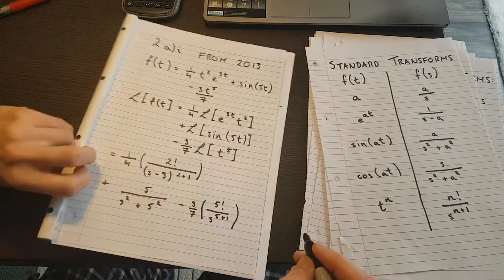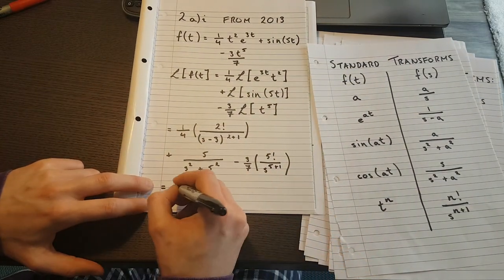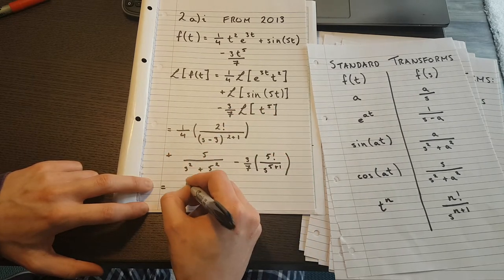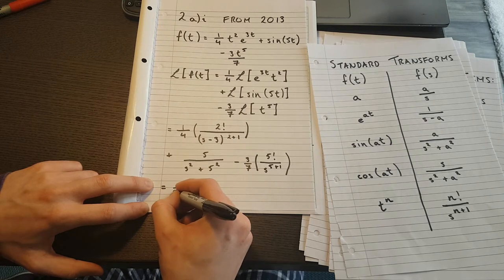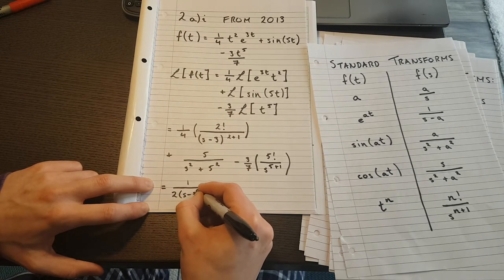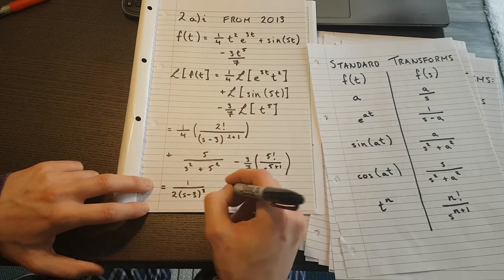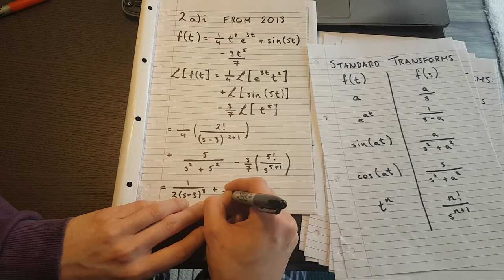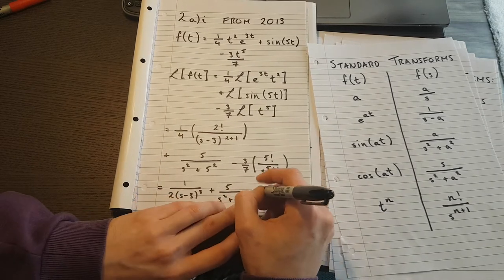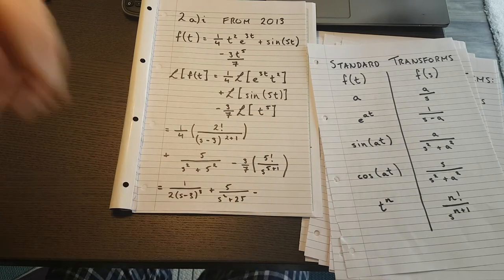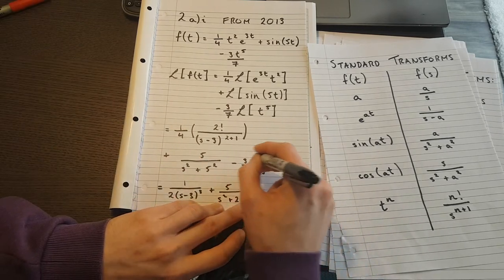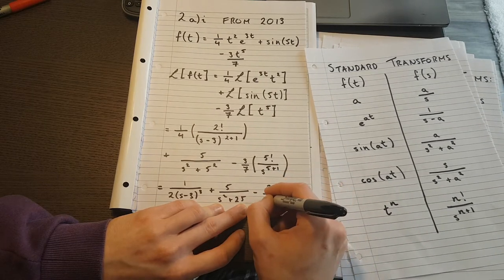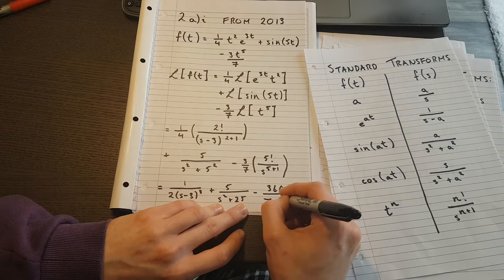And now I can clean that up. This is going to be 1/4 of 2 factorial, 2 factorial is 2, so this is going to be 1, and on the bottom I have 2 times (s-3)³. I have plus 5 over s²+25, and I have minus 3 times 120, which is 5 factorial, so 3 times 120 is 360, and on the bottom I have 7s^6.